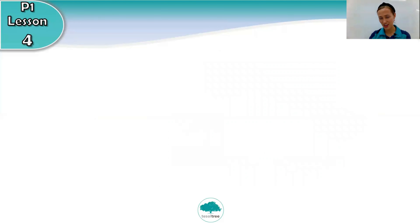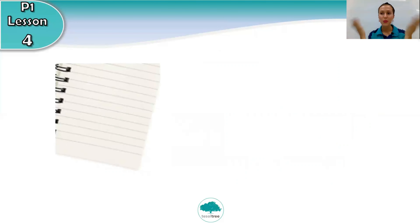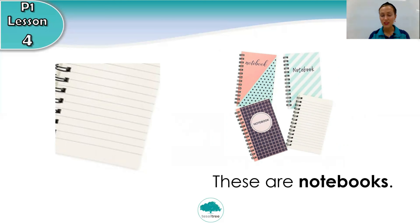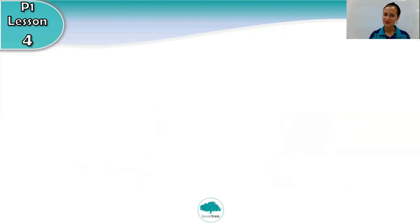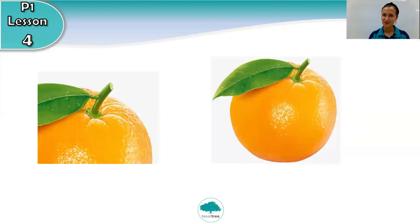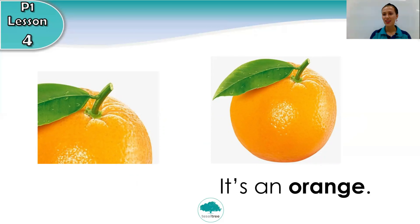Our next picture is... what is it? These are notebooks. Very good. These are notebooks. Next picture. What is it? It's an orange. Can you repeat after me? It's an orange. Very good. Well done.